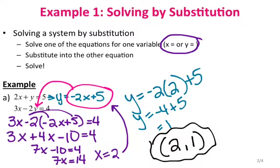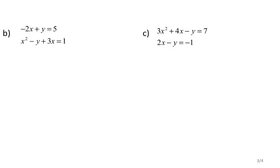That was a system with two linear equations. Now let's look at what we have to do when we have a system with a linear and a nonlinear equation. What makes examples B and C different is that now you have x squared in the mix. I still recommend solving for the variable that is not squared. Since x is being squared in example B, I'm going to solve for y in the other equation and then make the substitution.